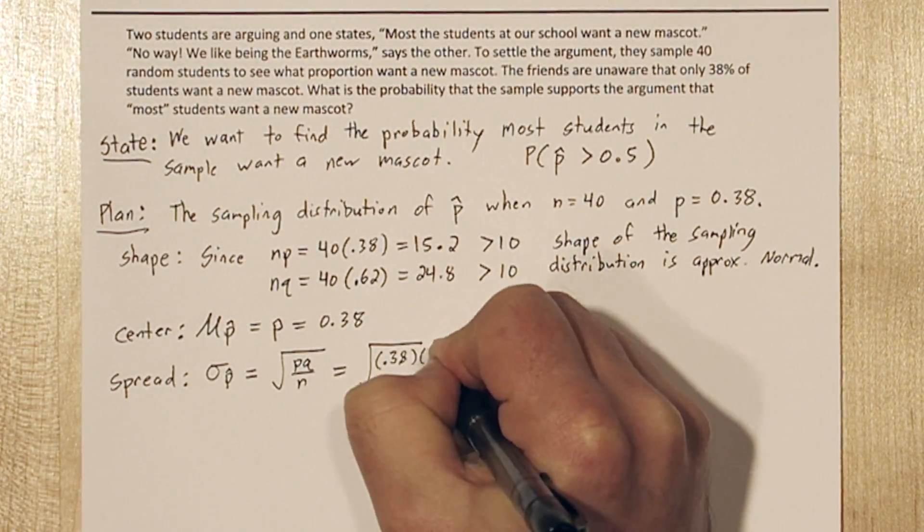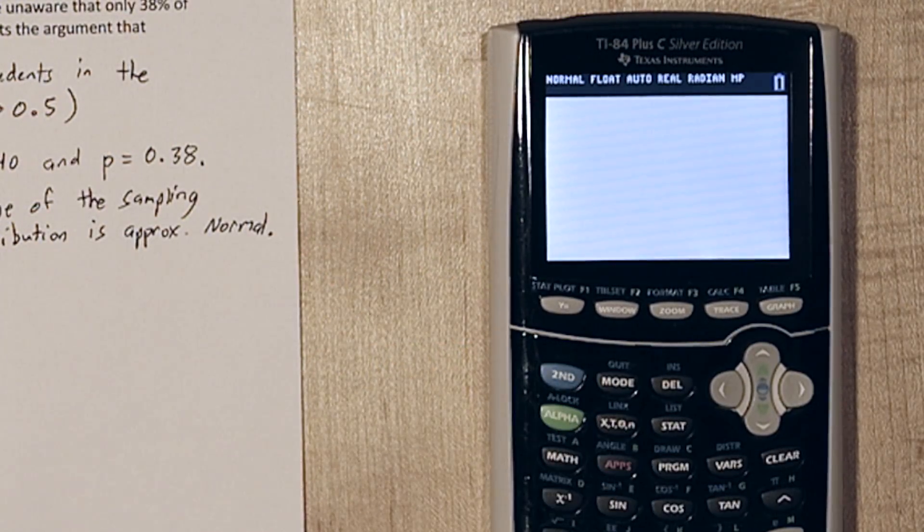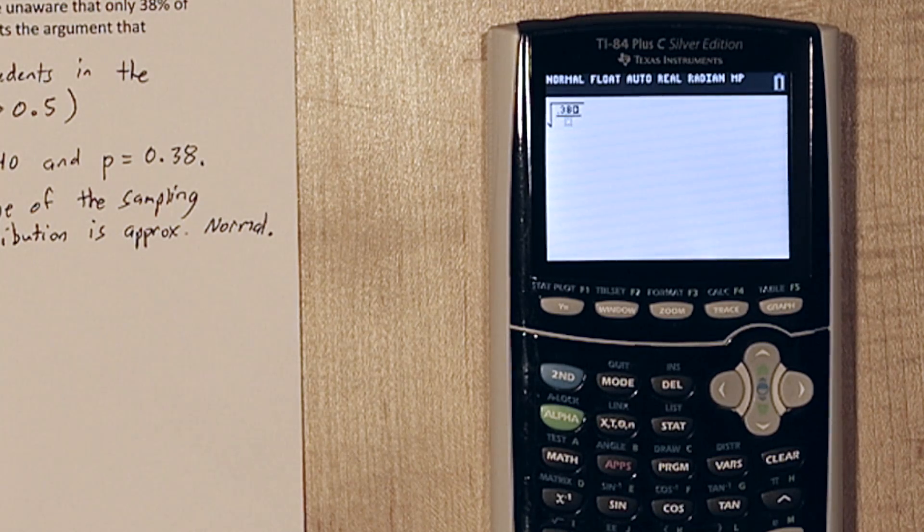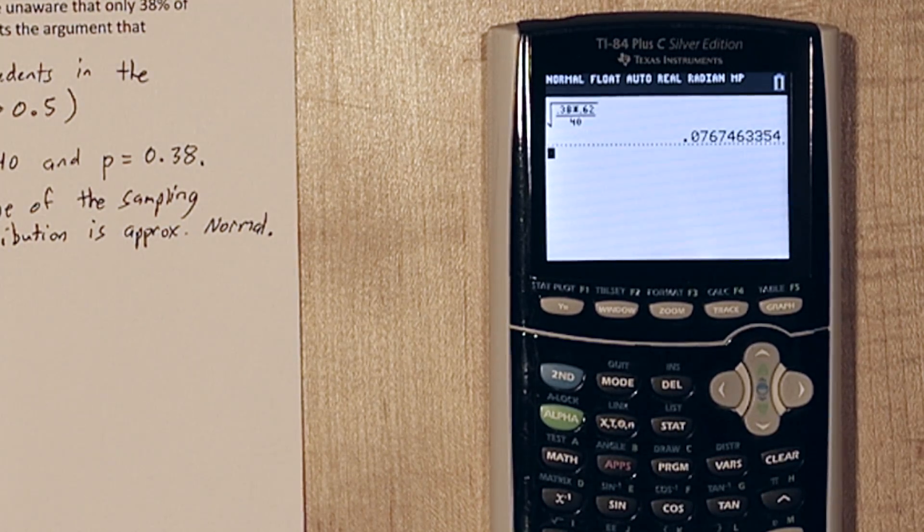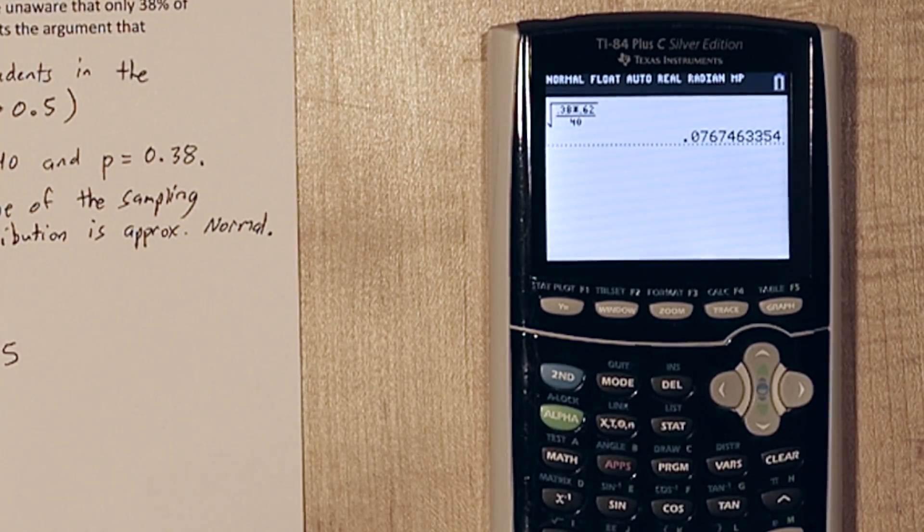If we assume the school has at least 400 students, the 10% condition is satisfied and we can calculate the standard deviation of the sampling distribution of p-hat. We're going to store this value as x by pushing the STO and x button.